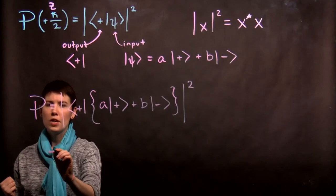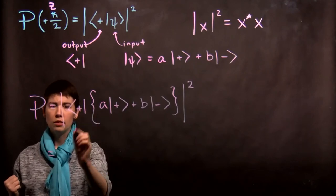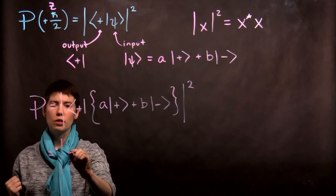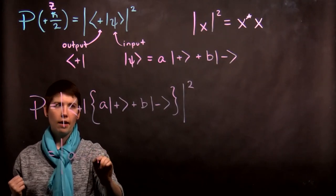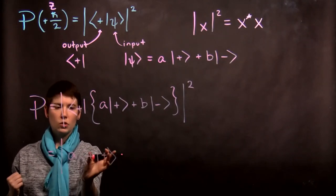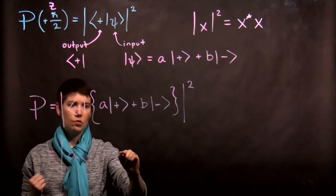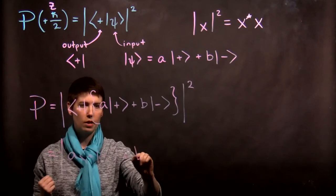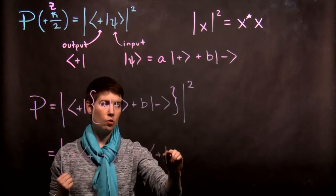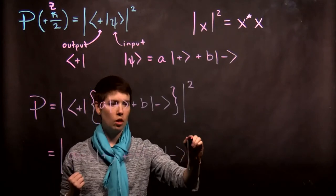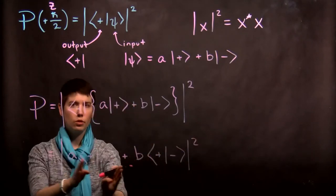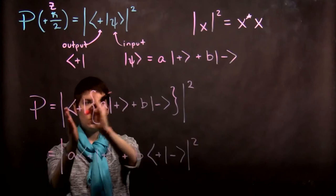here we're not actually working with vectors in a matrix formalism yet. That's going to come later. We are just knowing that these are vectors in a vector space. So what we can do here is actually distribute. And we can pull these scalars out.